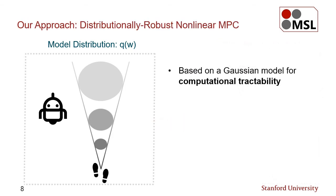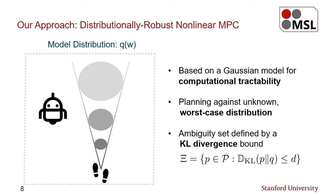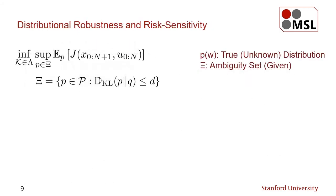This work addresses this highly non-trivial problem and proposes a novel distributionally robust nonlinear MPC method. The closed-loop control computation of our algorithm is based on a baseline Gaussian model, which helps retain computational tractability. However, the controller is distributionally robust in the sense that planning is against an unknown worst-case distribution within a set of distributions called the ambiguity set. This set is defined by a given Kullback-Leibler divergence bound from the model distribution. Mathematically, we are interested in deriving a feedback control policy kappa that minimizes the worst-case expected cost of the control objective out of the ambiguity set.